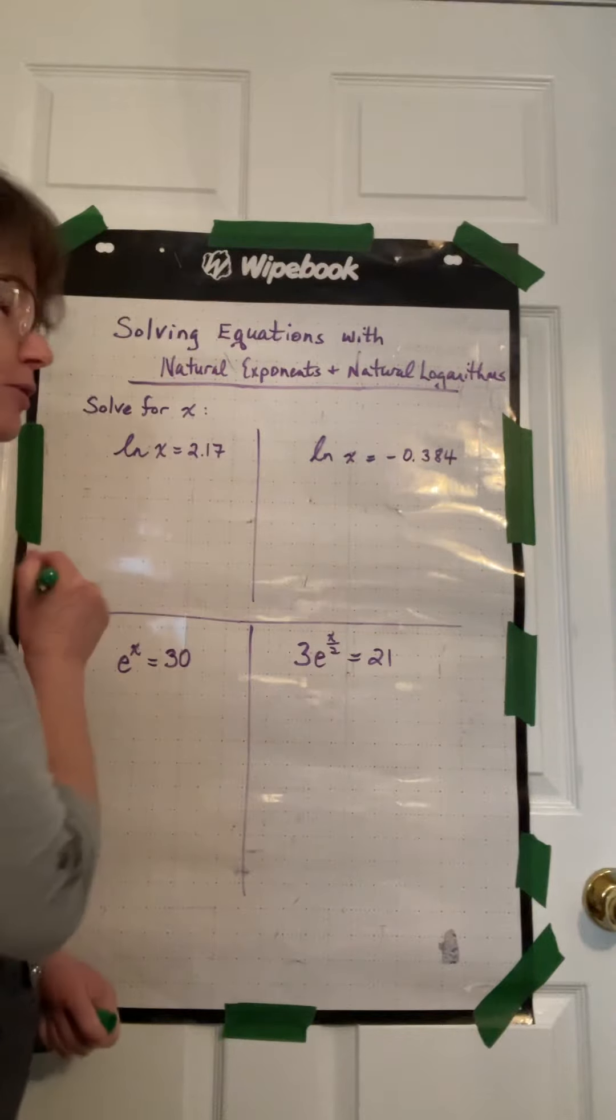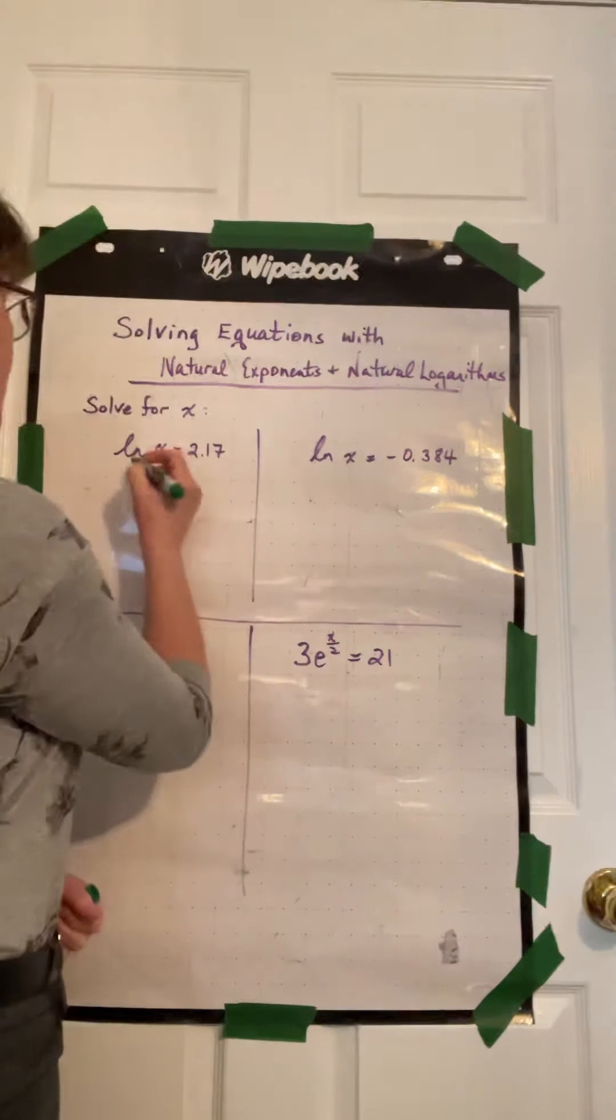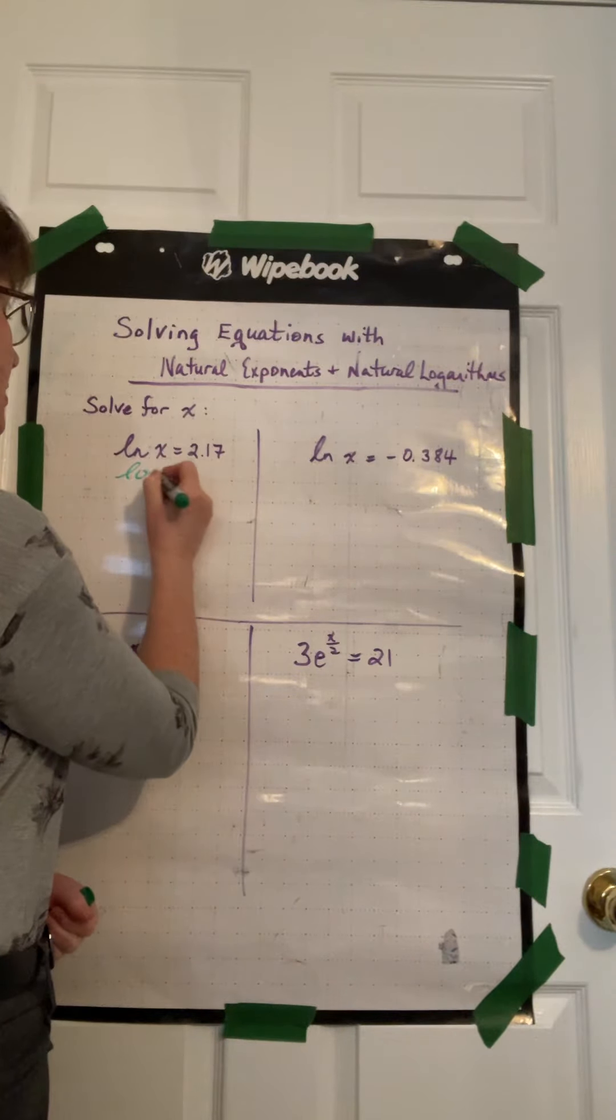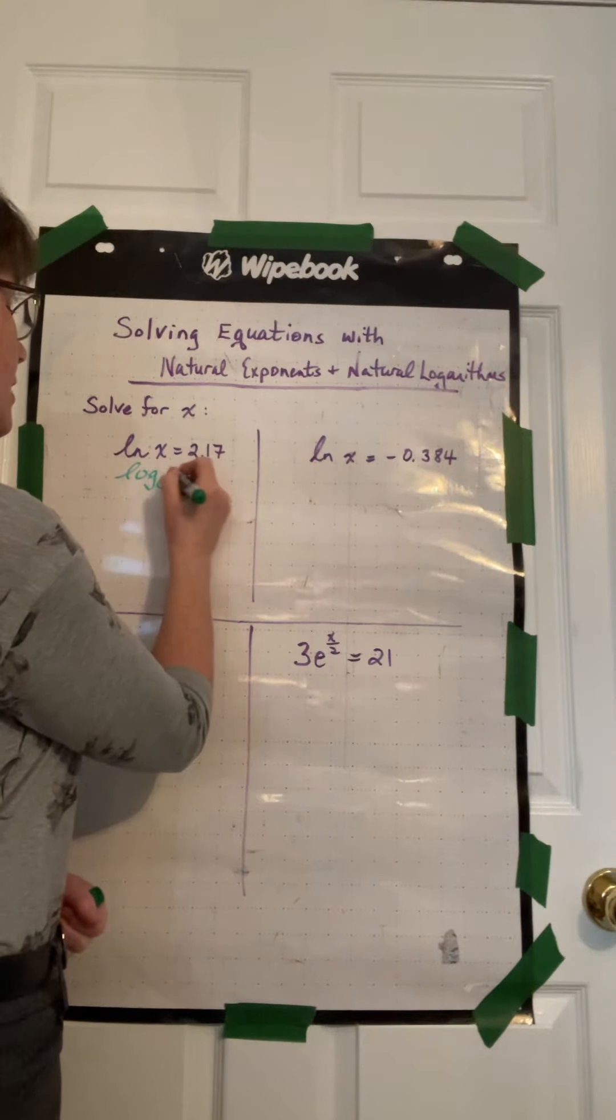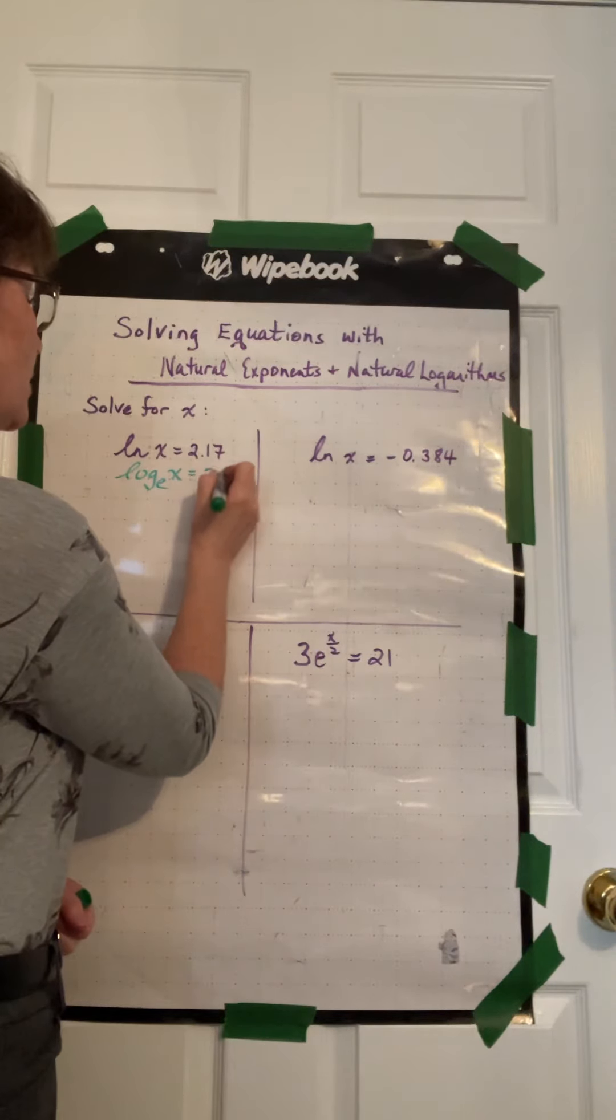ln x equals 2.17. So we know that this really means, although this is not proper notation, it really means log base e of x is equal to 2.17.